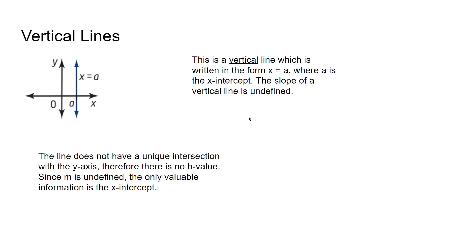For vertical lines, this is a bit different — the slope is undefined. A vertical line will not intersect with the y-axis uniquely. Lines and functions in general need to intersect the y-axis at most once, so you can't have an x value that maps to two points. Since there is no y-intercept, there's no b value. The only valuable information is the x-intercept, which we define as a. So the vertical line's equation is of the form x equals a.